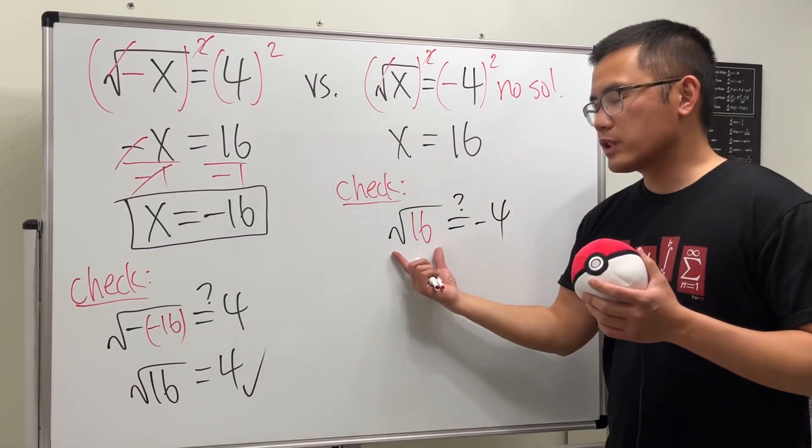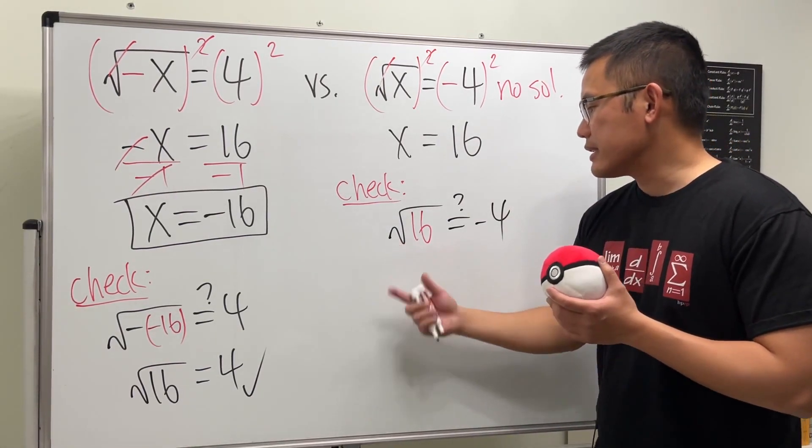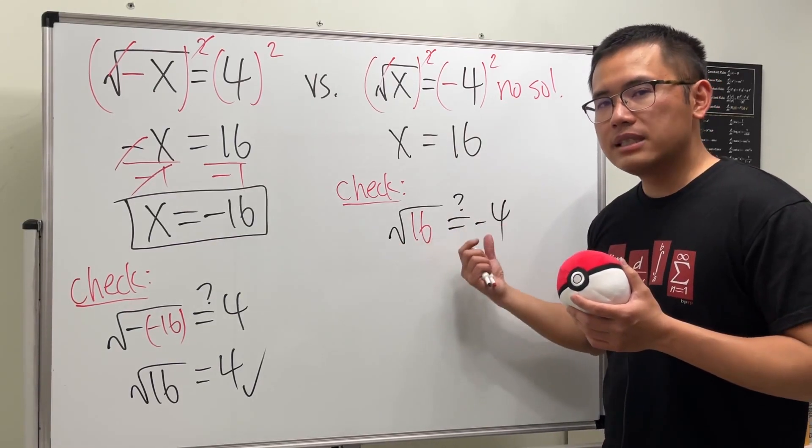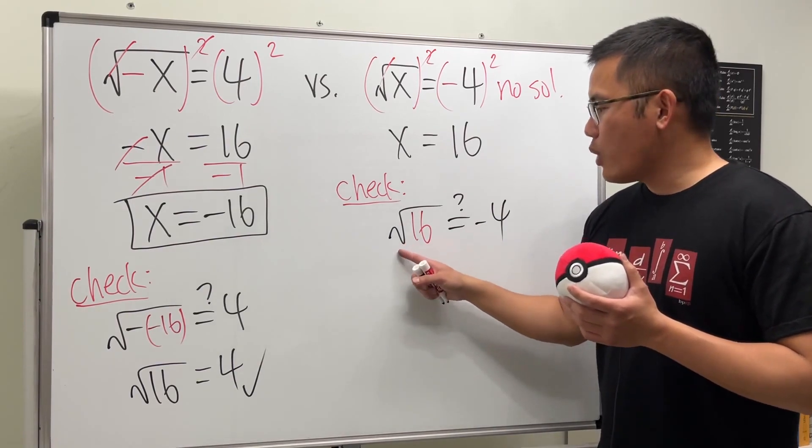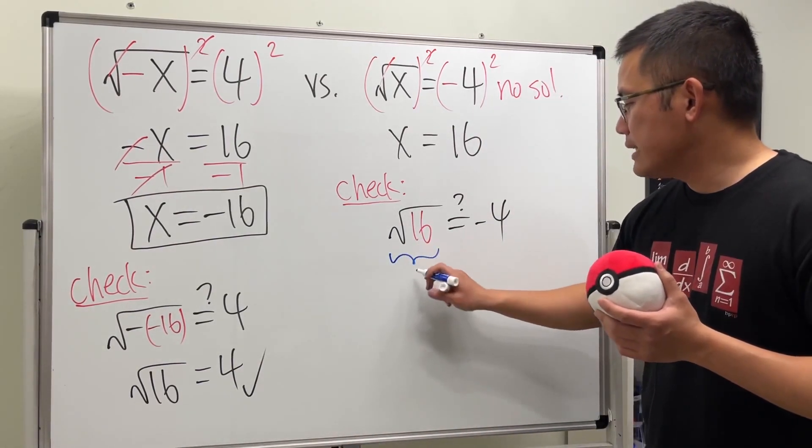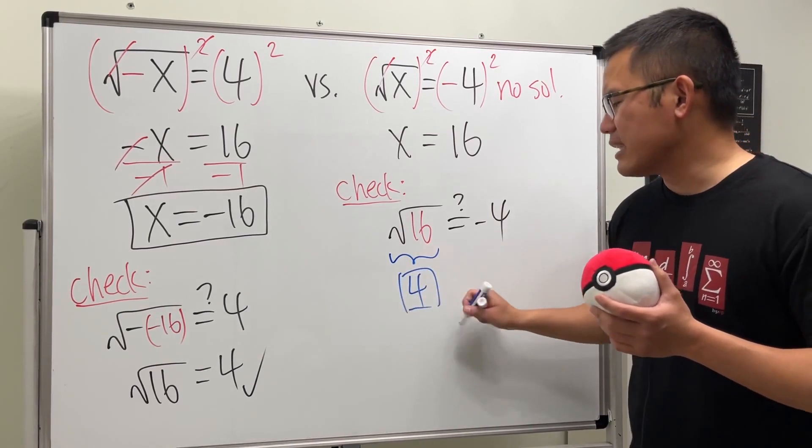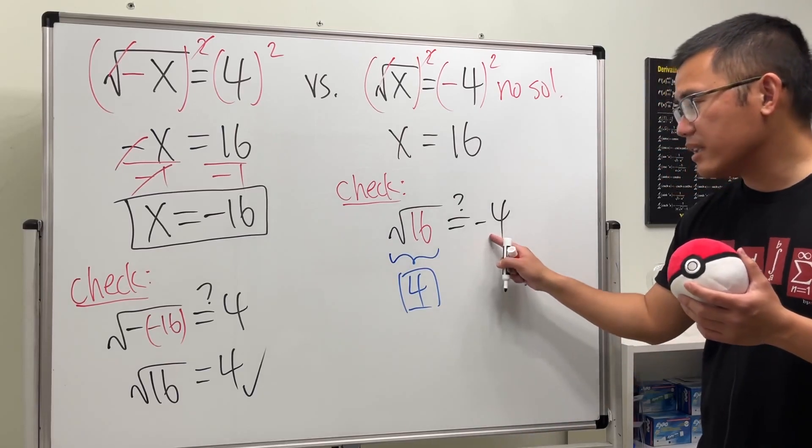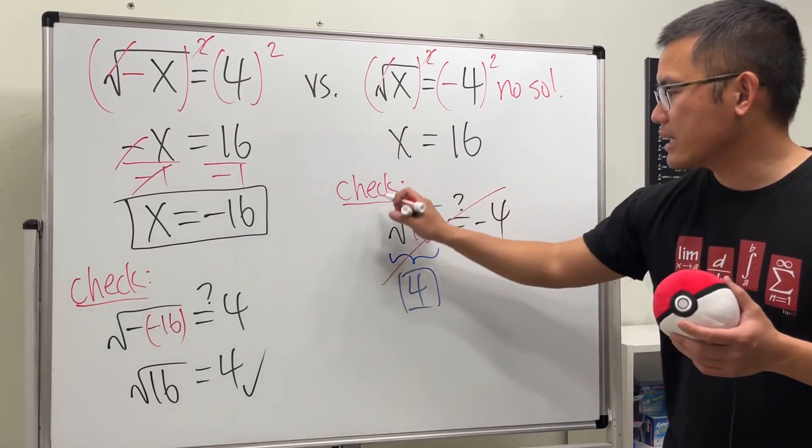Well, remember, square root of a positive number inside, this right here should always be a positive output. Square root of 16, this right here is actually just the number 4, and it's a positive 4. But right here we are saying the answer is negative 4 on the right hand side, so of course this is not correct.